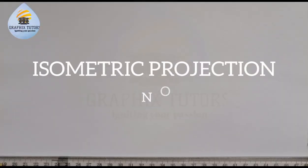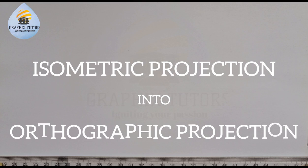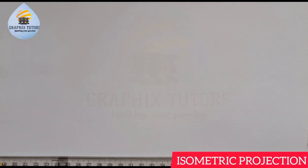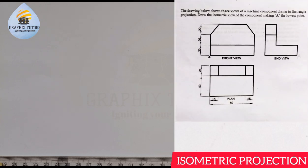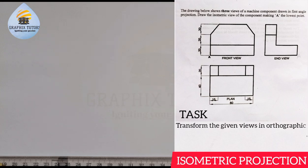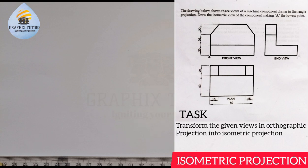Good everyone, my name is Graphics. If you look at the right-hand side of the screen you see a question, and we're told to solve the problem. The question says: the drawing below shows three views of the machine component drawn in first angle projection. Draw the isometric view of the component making A the lowest point. We are told it is in first angle projection — this is the front elevation, the plan, and the end view.